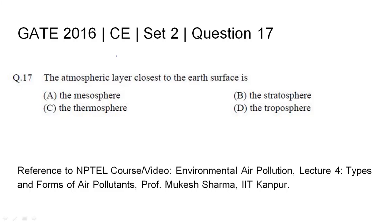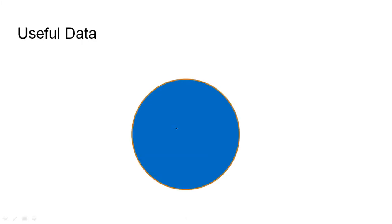GATE 2016 Civil Engineering Set 2, Question 17: The atmospheric layer closest to the earth's surface is - four options have been given: A) mesosphere, B) stratosphere, C) thermosphere, and D) troposphere. The relevant NPTEL reference has been mentioned.